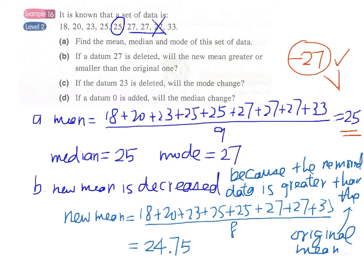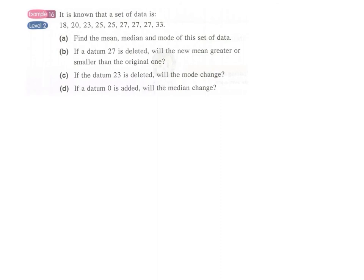This is our rationale, our reason. And now we come to part C. If the data 23 is deleted, will the mode change? We can see that even if we remove the data 23, the mode is still 27, because we still have three 27s in the set of data. Therefore, the mode is not changed.